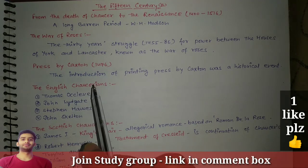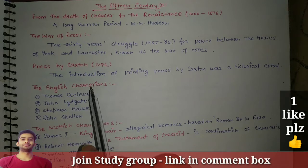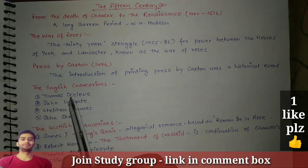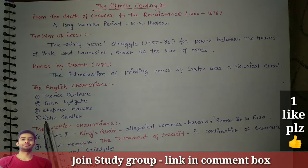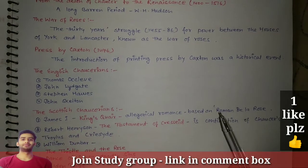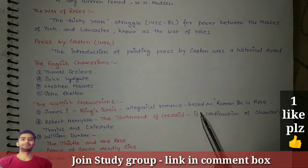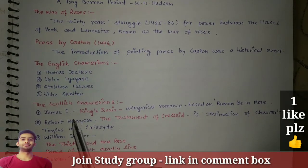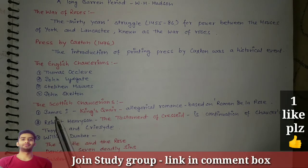The English Chaucerians — who were the Chaucerians? It means they were followers of Chaucer and they were following the writing style of Chaucer. The first was Thomas Hoccleve, then John Lydgate, Stephen Hawes, and John Skelton.